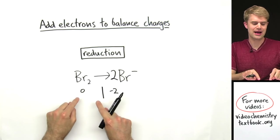Atoms balance, charges balance — we know we did it correctly. So just to go back to what we talked about at the beginning: Br, bromine, is being both oxidized and reduced here. But if you just take that into account when writing the half reactions and then work through the rest of the problem just like usual, it's not a big deal. You might have to combine some Br's at that last step when you add the two equations together, but other than that it's a fairly standard problem. Don't freak out if you get this type of problem where the same thing is both oxidized and reduced. And as I said at the beginning, if you can do this kind of problem, you are well on your way to being a redox balancing ninja.